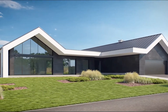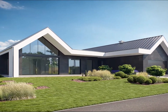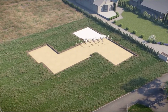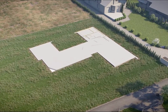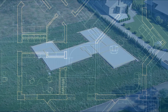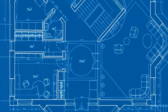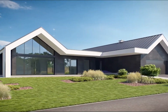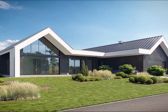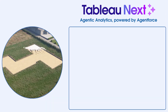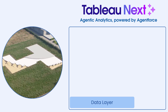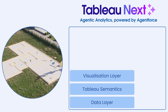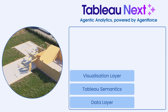The easiest way to understand it is to picture building your dream house. You start with land and a foundation for your house to stand strong, then follow blueprints and codes, build rooms and walls, add electricity and plumbing, and finally move in with everything working together. TabloNex works the same way — helping you build a complete analytics system step-by-step, from data layer to action layer.